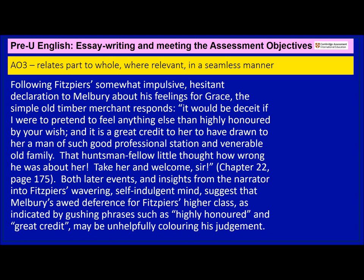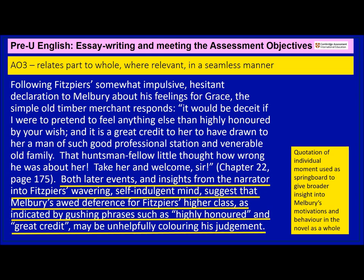AO3 requires you to relate part to whole where relevant in a seamless manner. Whilst of course you must quote individual details, these should act as a springboard to give broader insight into the essay title and novel as a whole. Here I spring athletically from quoting Melbury's delighted response to Fitzpiers' revelation about his unwittingly honourable attentions to Grace, to suggest that he is hampered by his reverence for the upper classes not just here but in the novel as a whole, and that there are significant consequences for this.